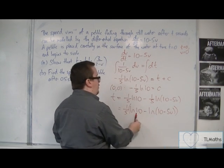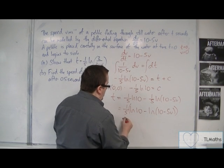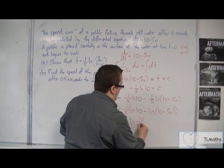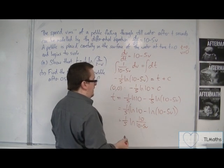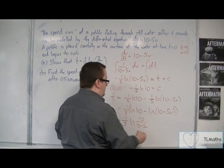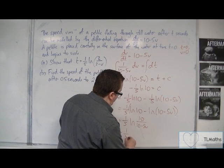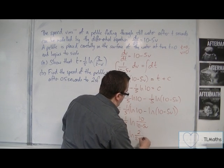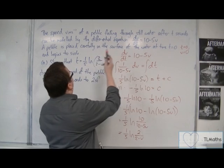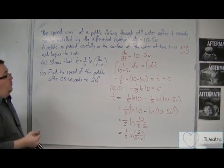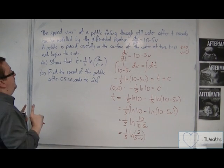Now because we've got log of something take away log of something else, we can combine the two logarithms to write that as log of 10 over 10 minus 5v. And then we can divide top and bottom in that fraction by 5. So that's one-fifth log of 2 over 2 minus v, which is exactly what they had there. So that's what we were required to do.